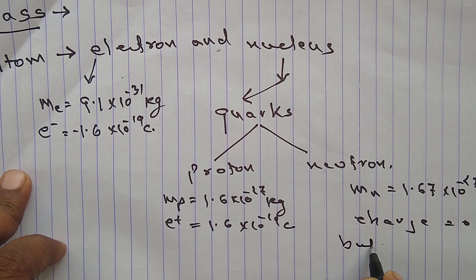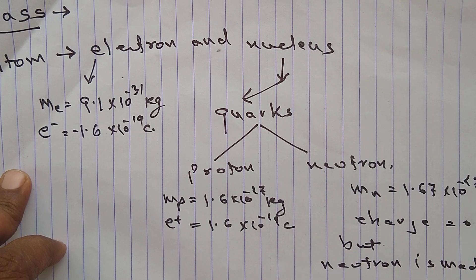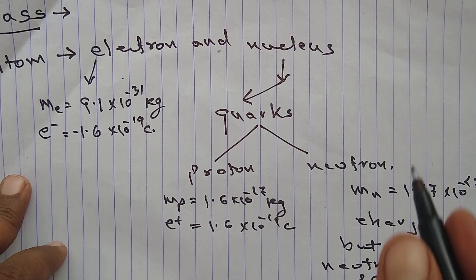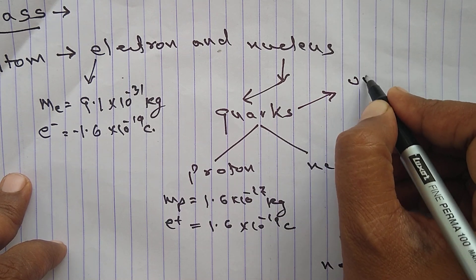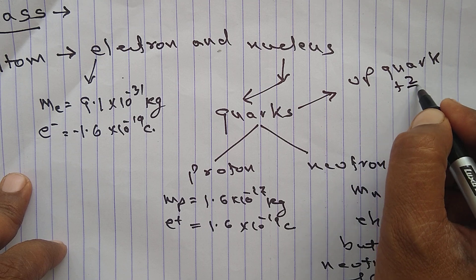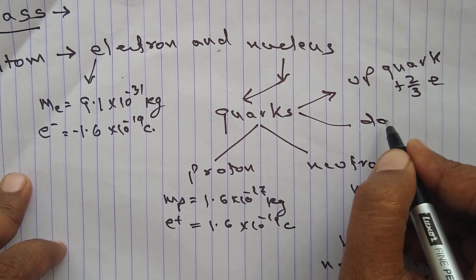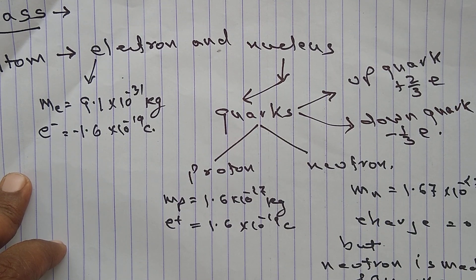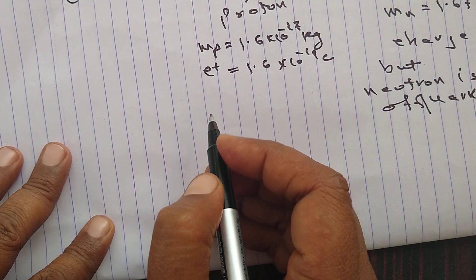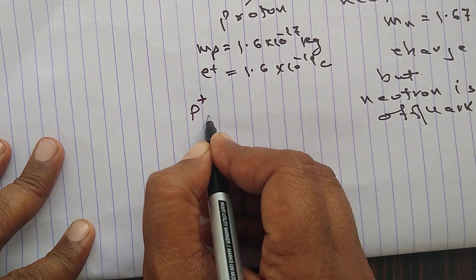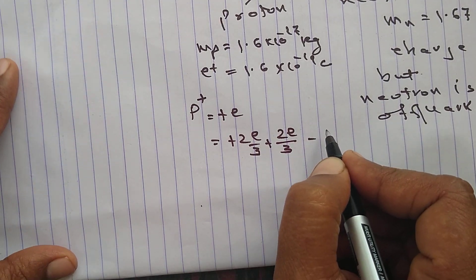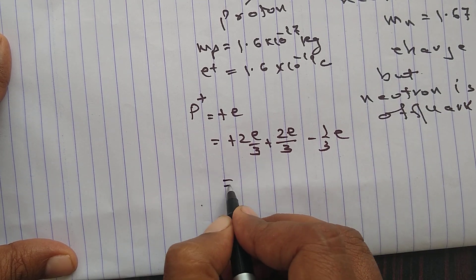Neutron is made of quarks. Basically, there are two types of quarks: up quark with charge +2/3 e, and down quark with charge −1/3 e. So when we say a proton has charge +e, that equals +2/3e + 2/3e − 1/3e, which is the UUD combination.